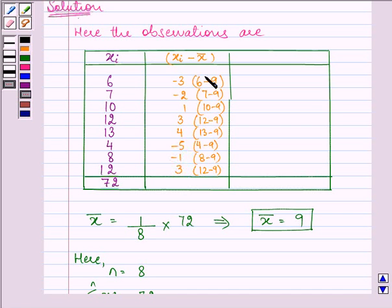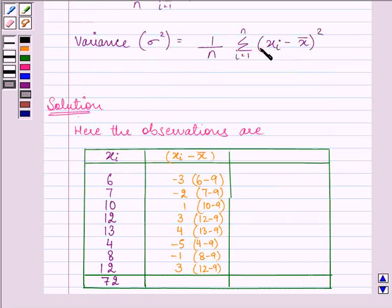Now, we need to find out the square, since we need to find out summation xi minus mean the whole square. So let us first find out xi minus mean the whole square, and then we'll find their sum. So we have here, minus 3 the whole square as 9, minus 2 the whole square as 4, and so on. Now, let us find out the sum. And the sum is coming out to be 74.